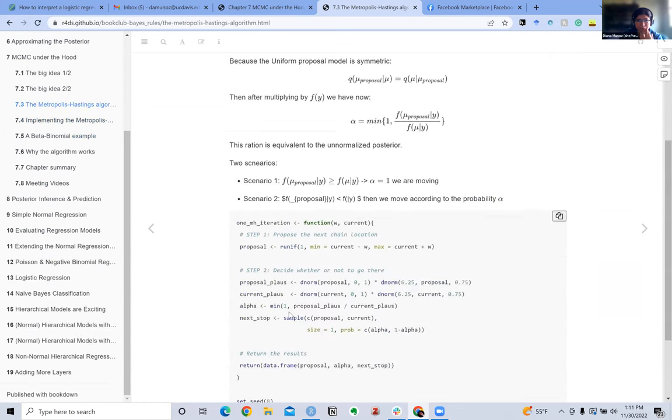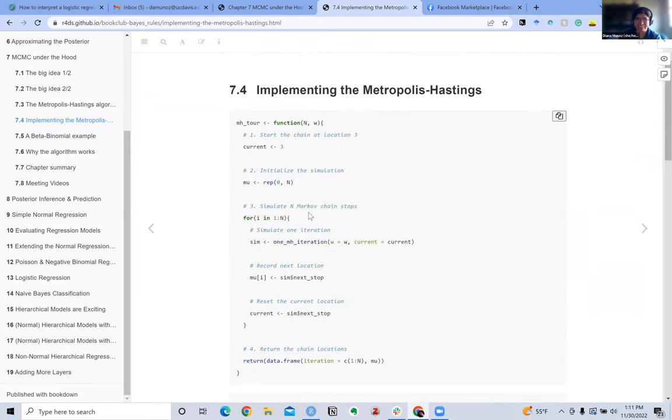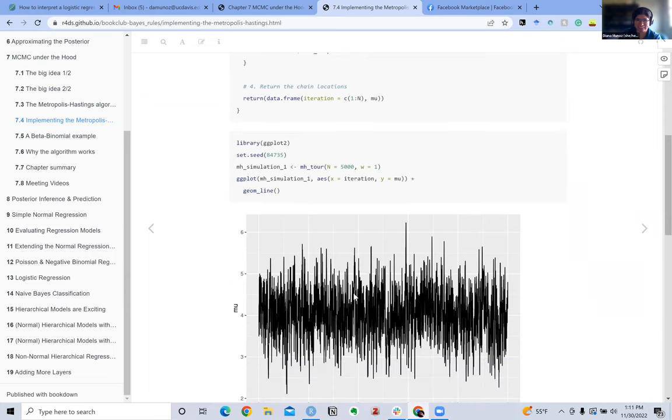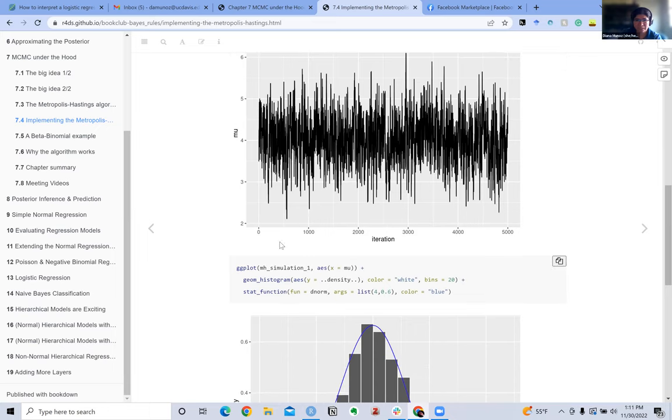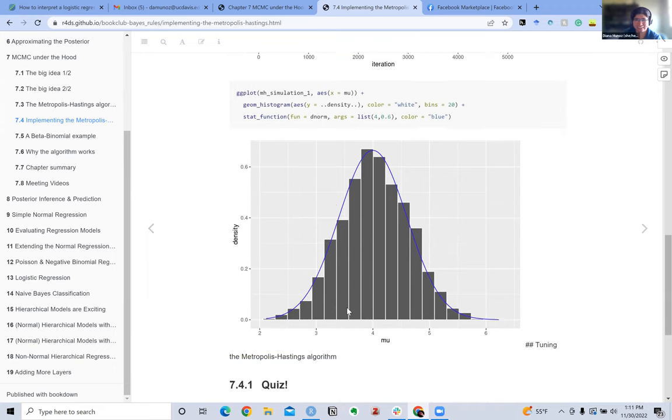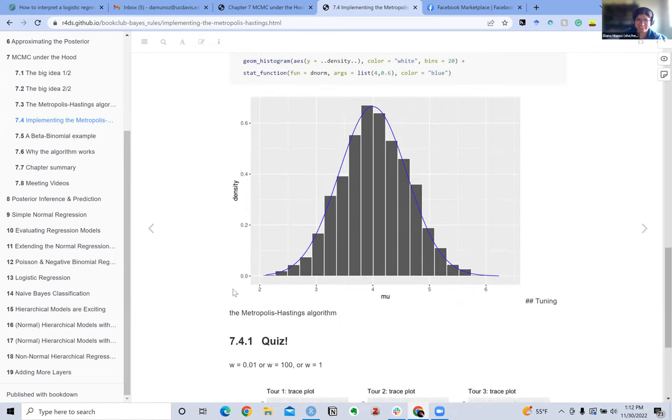This first code here just did one iteration, but then they built a more refined one that will pull multiple iterations, and this shows us how a Markov chain is run. Based on how we evaluated our Markov chains in the last chapter, this looks like a pretty good specification here. The caterpillar plot shows no specific trends, looks good, and when we pull draws from this calculated posterior, it looks pretty good.